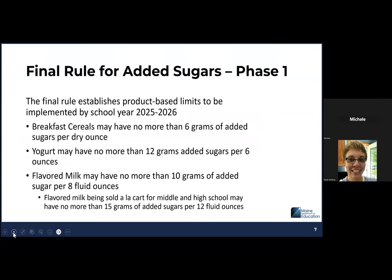The final rule for added sugar phase one will be implemented in school year 25-26, so we have about one year to get ready. Breakfast cereals may have no more than six grams of added sugars per dry ounce. Yogurt may have no more than 12 grams of added sugars per six ounces. And flavored milk may have no more than 10 grams of added sugar per eight fluid ounces. If you are selling flavored milk a la carte for middle and high schools, you can have no more than 15 grams of added sugar per 12 fluid ounces.